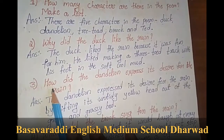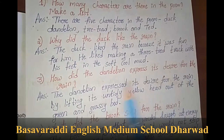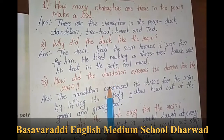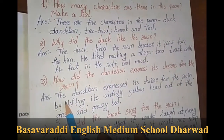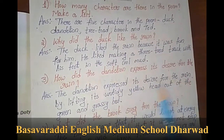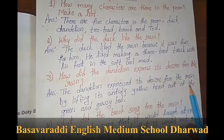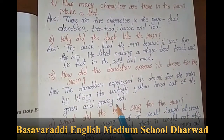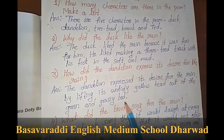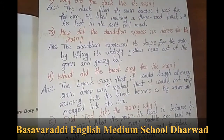Third question: how did the dandelion express its desire for the rain? The dandelion expressed its desire for the rain by lifting its untidy yellow head out of the green and grassy bed, showing that it wanted rain.